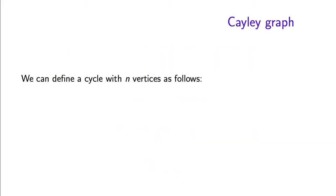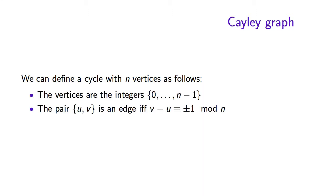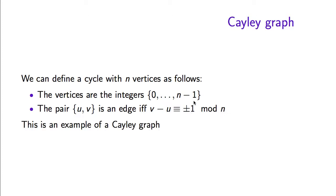We are going to introduce the notion of a Cayley graph and show how to compute eigenvalues and eigenvectors of all Cayley graphs. Before giving the formal definition, let's start from the example of a cycle. One way to define a cycle over n vertices is to say the cycle is the graph whose set of vertices is the integers from 0 to n-1, and the set of edges is pairs such that the difference between v and u is either plus 1 or minus 1 modulo n. This definition will be the pattern for the general definition of Cayley graphs.